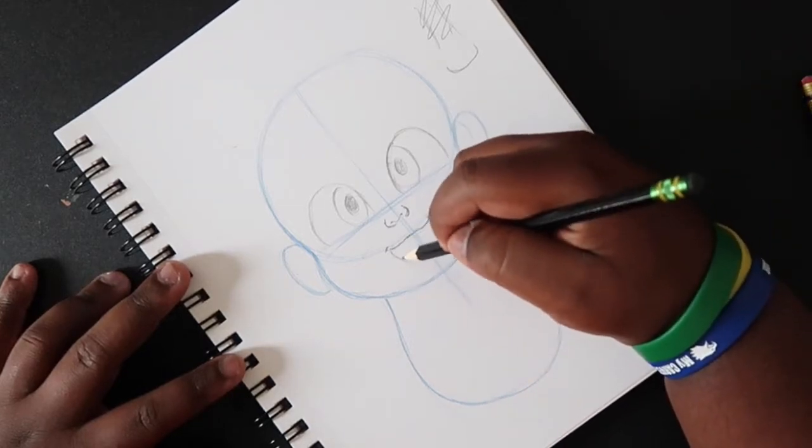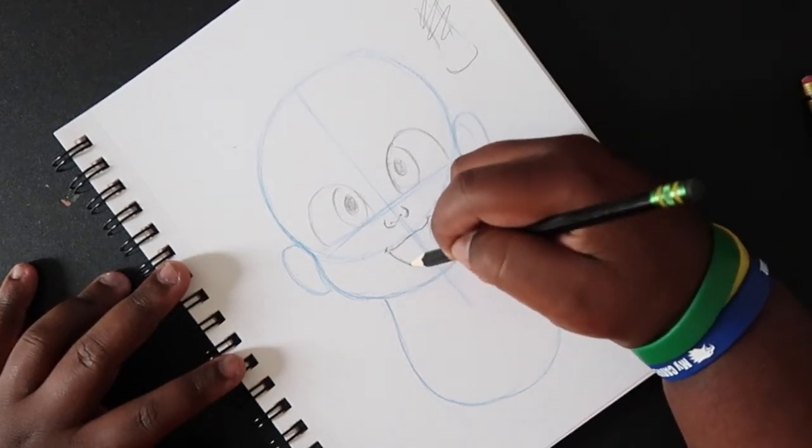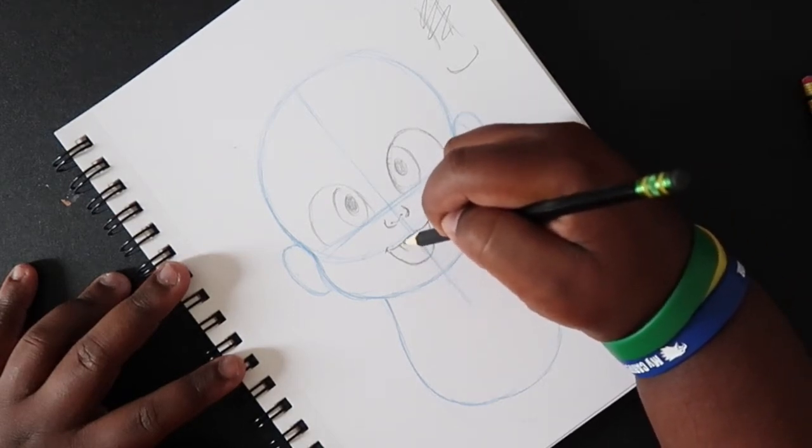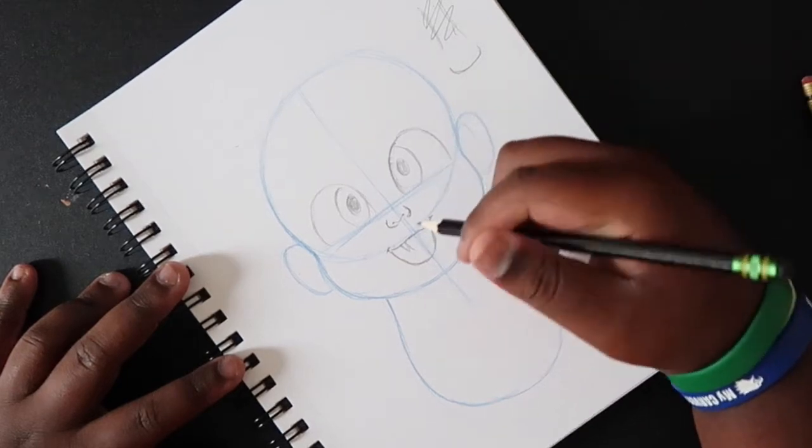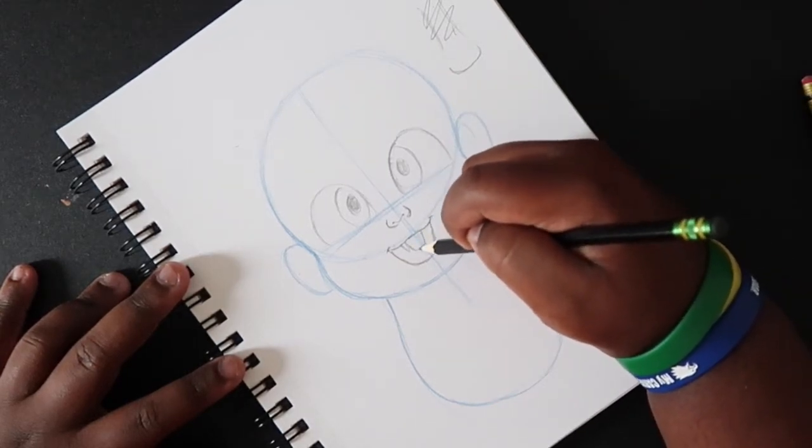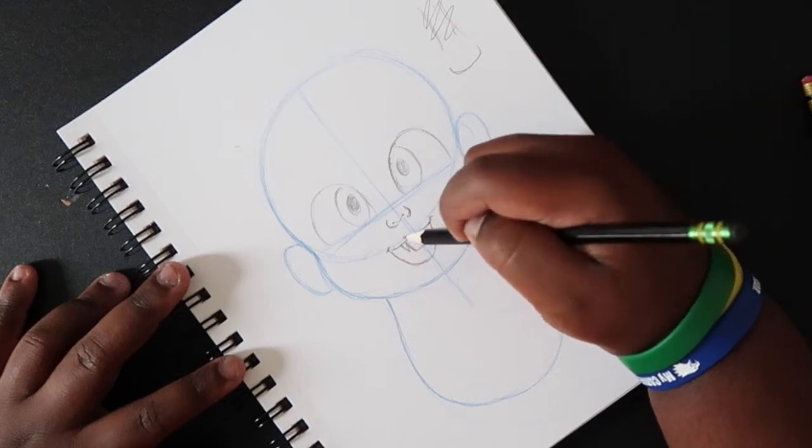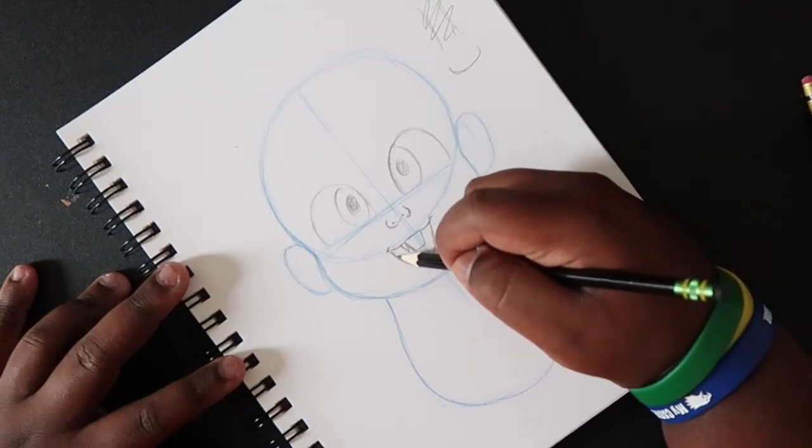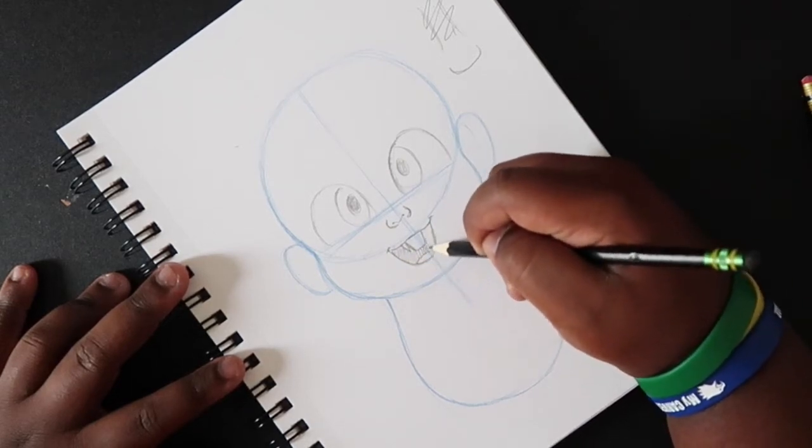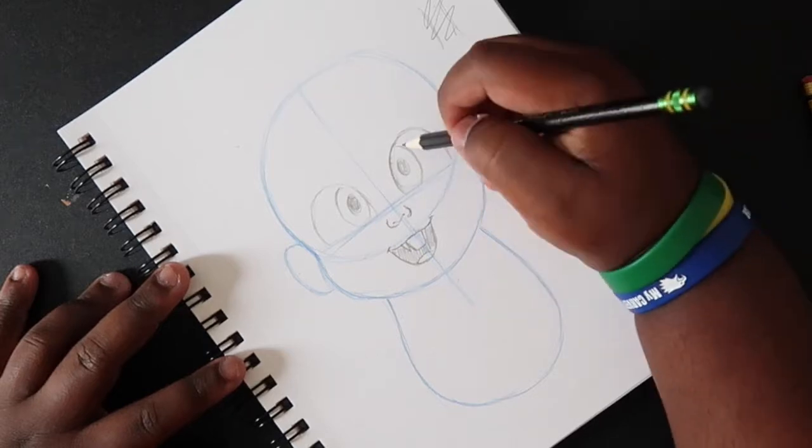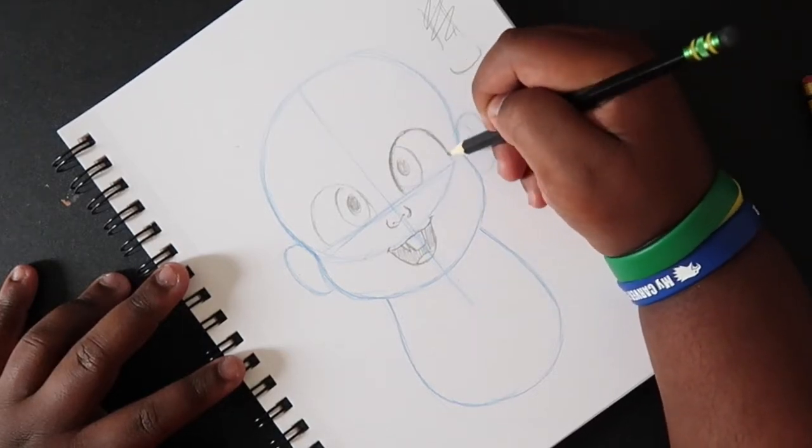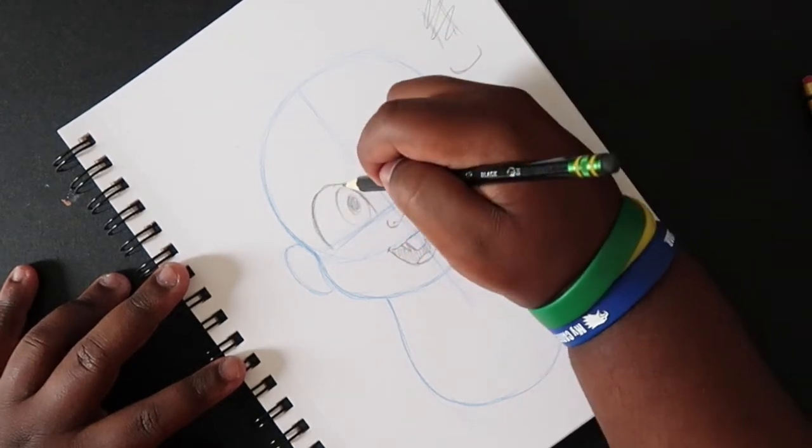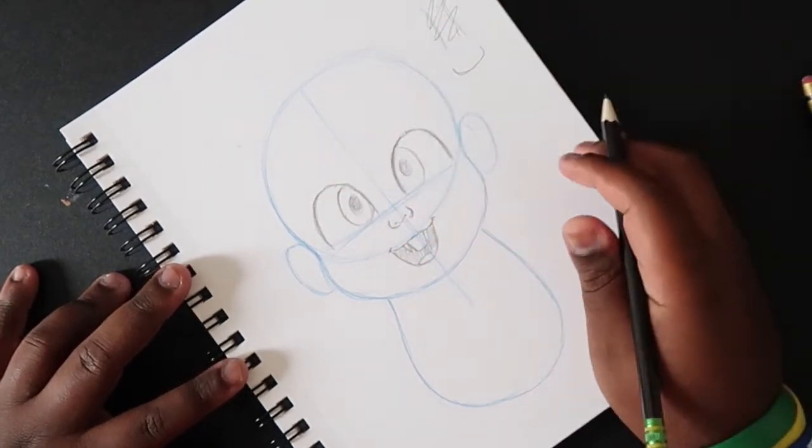And then I'm going to make the mouth go out a little bit, big open mouth. And then I'm going to draw some teeth because you know it's kind of teething, baby's teeth. And then I'm going to color that in, shade that in some black. And then I'm going to fold that in a little bit.